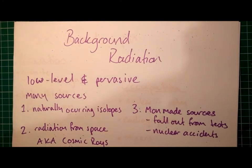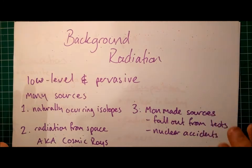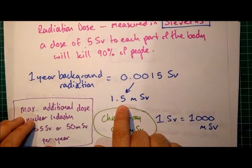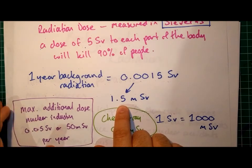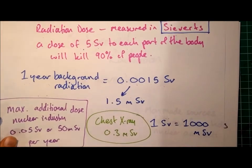What is background radiation? It's low-level radiation that's found everywhere all the time. You're exposed to it constantly — it's pervasive. Background radiation only makes up 1.5 millisieverts of a dose per year, so it is very low-level.